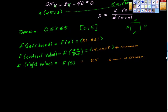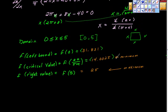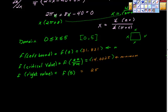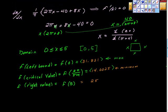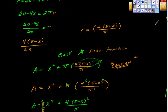So the key lesson here is: on free response problems with a domain, be careful to check the left and right bounds as well as all critical values and compare them. As I found, 25 is not greater than 31.831, and the critical value was actually the minimum. The maximum area is achieved when the square goes to zero and all wire forms the circle - that's where area is maximized. Hope this was helpful - keep working hard!